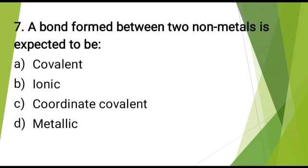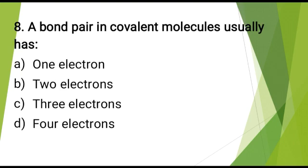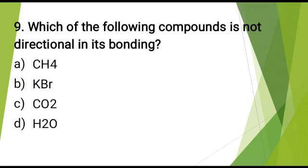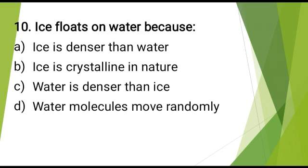A bond formed between two non-metals is expected to be? The correct answer is: covalent. A bond pair in covalent molecules usually has? The correct answer is: 2 electrons. Each of the following compounds is not directional in its bonding? The correct answer is: KBr. Ice floats on water because? The correct answer is: water is denser than ice.